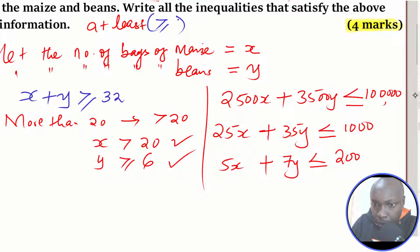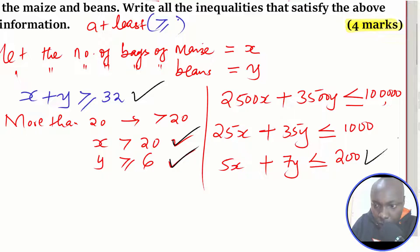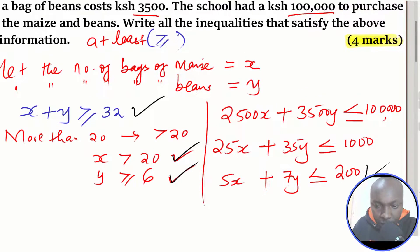To summarize, the four inequalities are: x plus y is greater than or equal to 32; x is greater than 20; y is greater than or equal to 6; and 5x plus 7y is less than or equal to 200. That is simply how you are supposed to form the inequalities. Thank you.